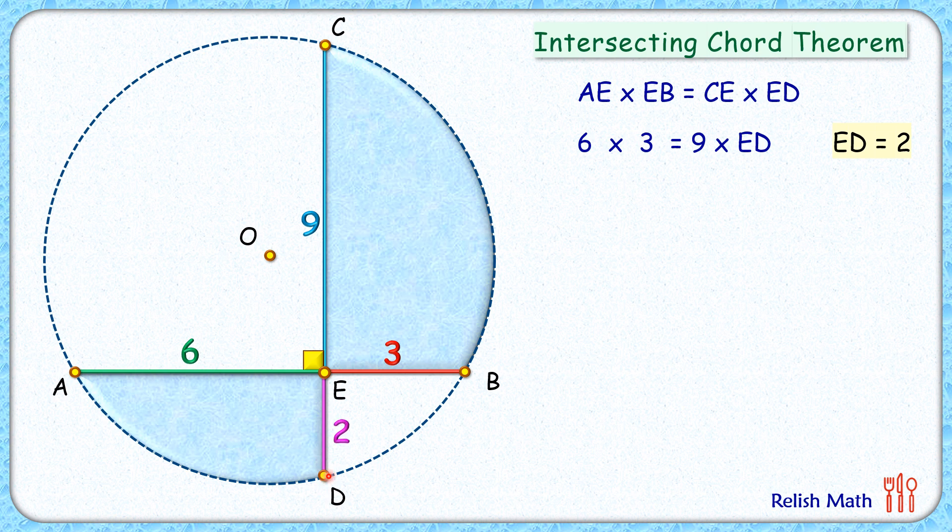Now to find the area we need the radius of the circle, and for that we'll apply the perpendicular chord theorem. That is, in a circle if two chords are intersecting each other at an angle of 90 degrees, then AE² + EB² + CE² + ED² equals diameter squared.